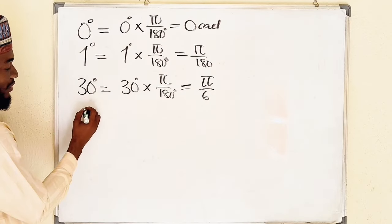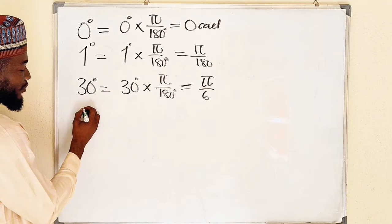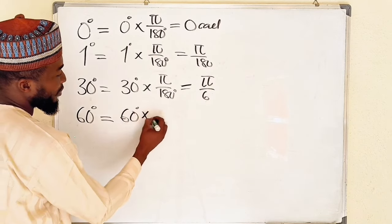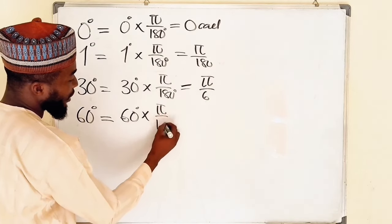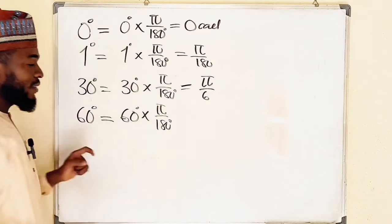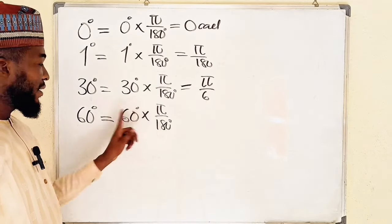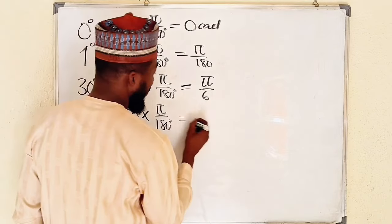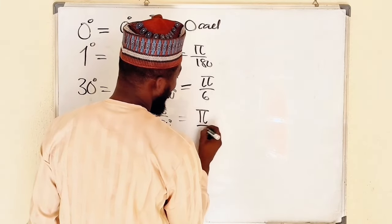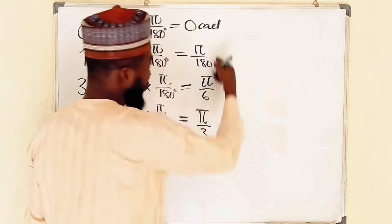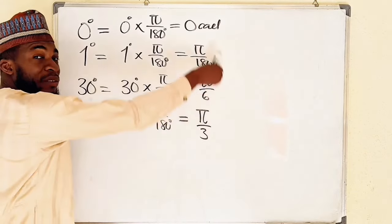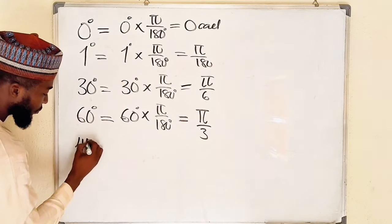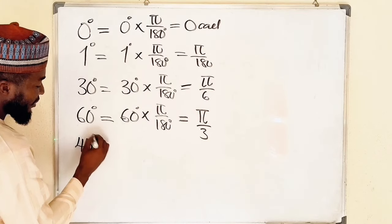What about 60 degrees? These are special angles. You have 60 degrees multiplied by π divided by 180 degrees. The zeros cancel, and 6 goes into 18 three times, so we have π divided by 3. So 60 degrees equals π divided by 3. All these angle values are in radians.